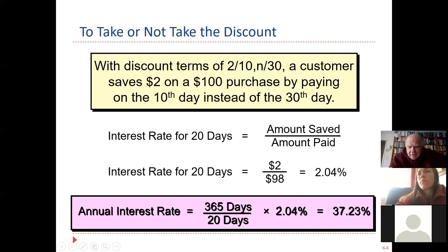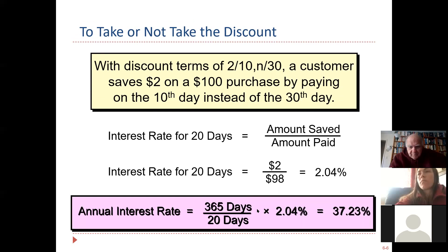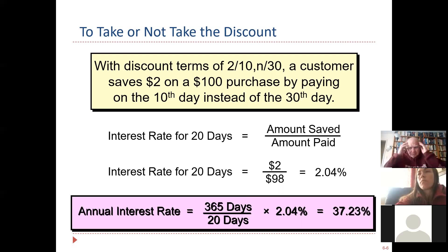How many days are in a year? 365 divided by 20 — they really earned 37%. You're not going to do that calculation on the test, but just have in mind that a 2% discount in 10 days is a very good discount.